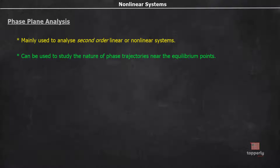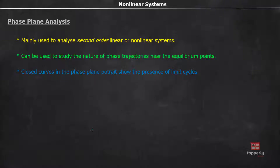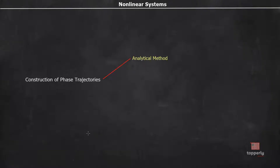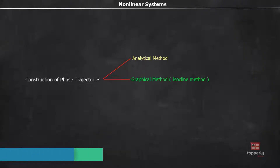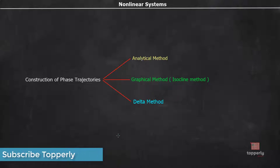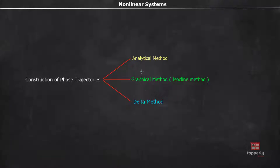Another point about phase trajectories is that closed curves in the phase plane portrait show the presence of limit cycles. There are many methods to construct a phase trajectory. However, in this lecture we limit to three methods only: the first is the analytical method, the second is the graphical method or isocline method, and the third is the delta method. Now, without wasting time, let's discuss the analytical method.